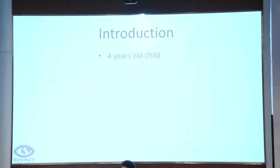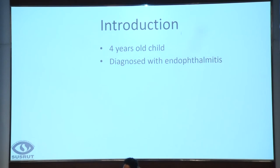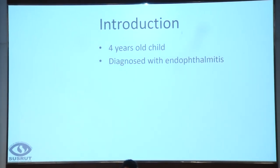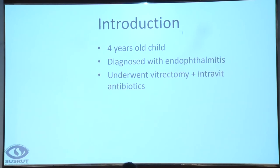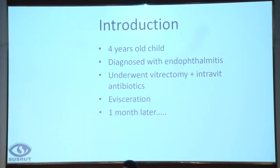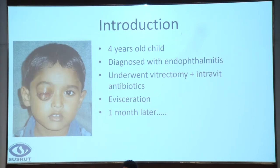Why this topic is being discussed is because there's one particular child whose story hurt me more than anything else. This was a child who was four years old, diagnosed with endophthalmitis in an institution where he underwent vitrectomy and intravitreal antibiotics were given. This child did not get better and was taken to another institution where he was eviscerated. A month later, he turned up with frank orbital retinoblastoma, thanks to intervention by our colleagues.